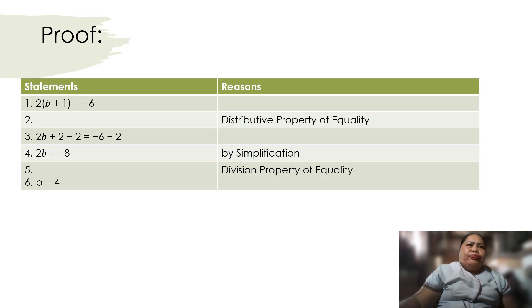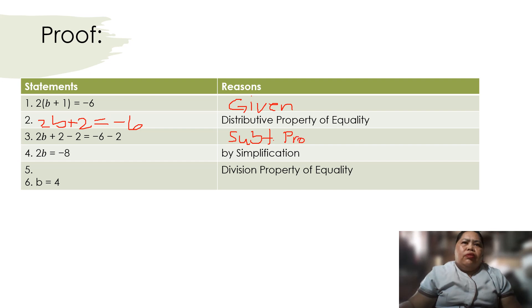So we have 2 times b plus 1 equals negative 6. Of course, it's given. So using the distributive property, so we have 2b plus 2 is equal to negative 6. So here we have, using subtraction property of equality.